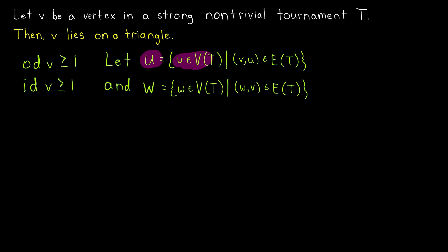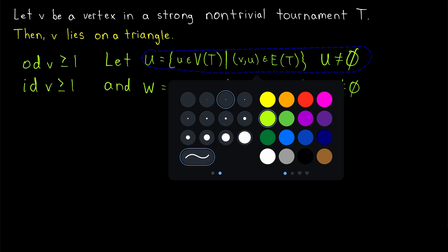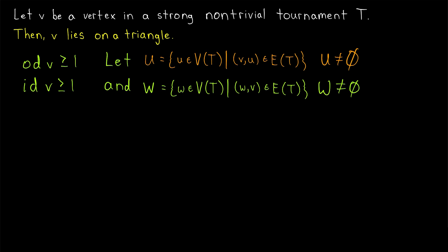So if we let U be the set of vertices in our tournament that v is adjacent to, then we can say that U is not empty. Because the outdegree of v is at least 1, so v is adjacent to at least 1 vertex. So U is not the empty set. Similarly, if we say that W is the set of vertices in our tournament that v is adjacent from, then we can say that W is not empty. Again, that's because the in-degree of v is at least 1, so it's adjacent from at least 1 vertex. And why don't we just go ahead and color-code these sets for kicks? We'll make the set U orange, and we can make the set W a light blue.